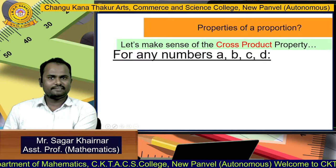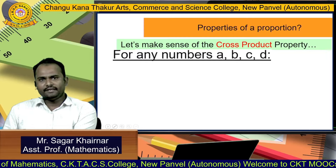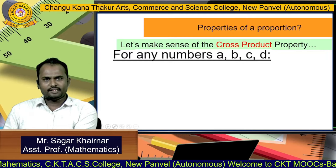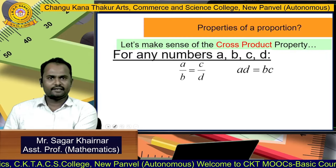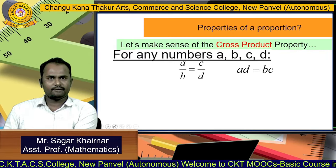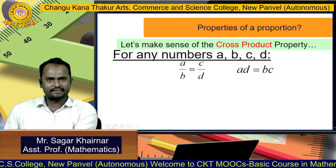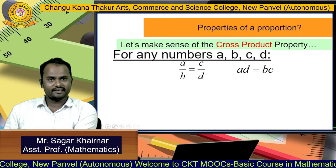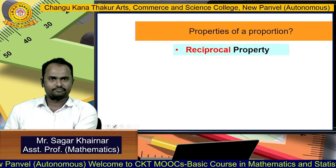In general, for any numbers A, B, C, D, we can write A by B equal to C by D. That means we can write A times D equal to B times C.